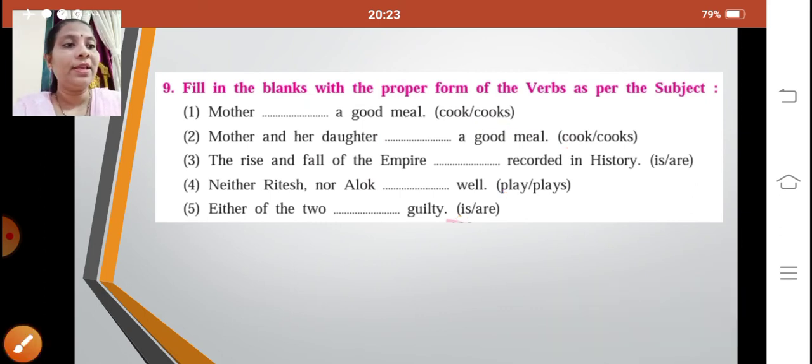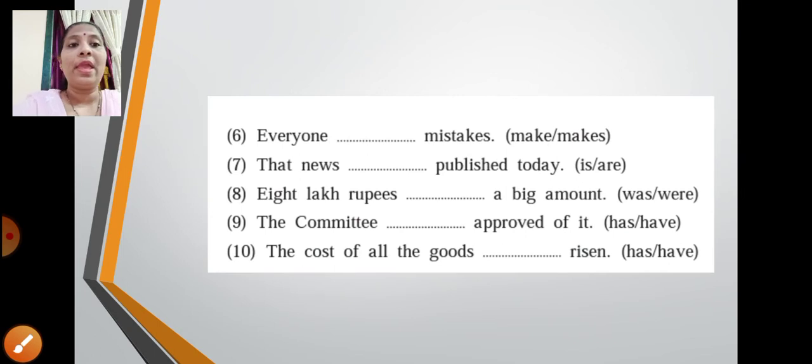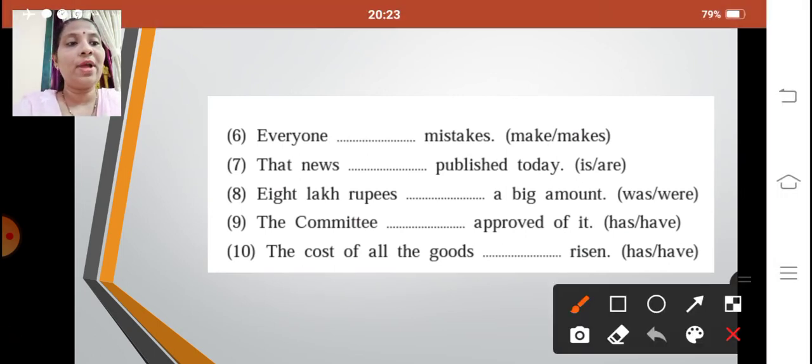Next, going ahead. Everyone dash mistakes. So everyone makes mistakes. That news dash published today. That news, okay, so that news is published today. Whatever news you get, yes, that is a collective noun, so it will be news. You cannot read new and news, okay. So that news is published today.